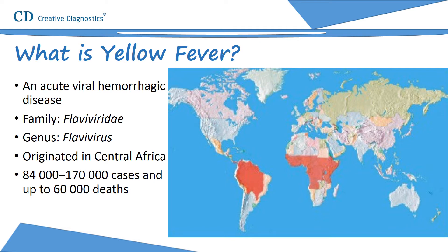According to a WHO report, there are an estimated 84,000 to 170,000 cases and up to 60,000 deaths due to yellow fever per year, with about 90% of these cases occurring in Africa.